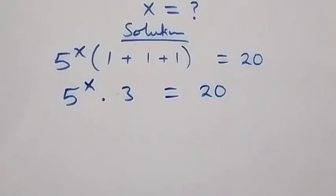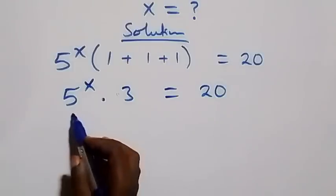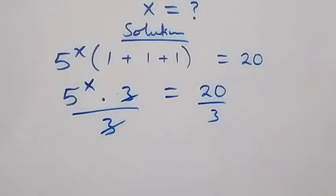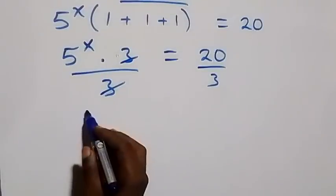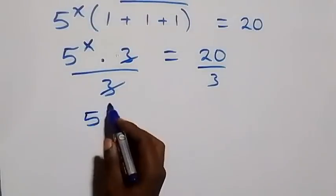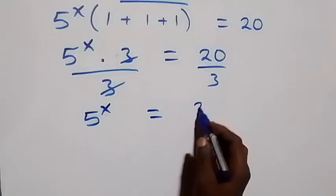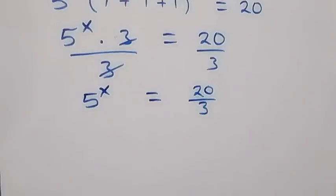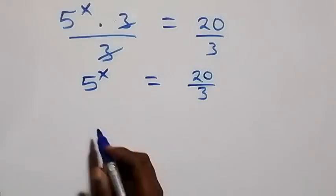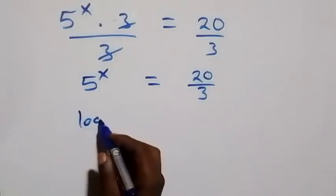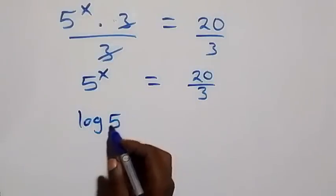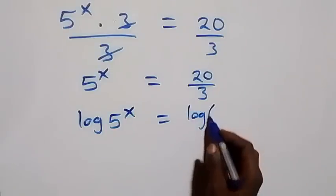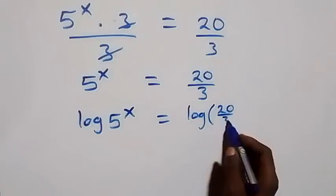At this next step we divide both sides by three. On this side, three cancels, which implies we have five raised to power x left here, equals to twenty over three. Then at the next step we take the log on both sides, and we have log of five raised to power x equals log of twenty over three.